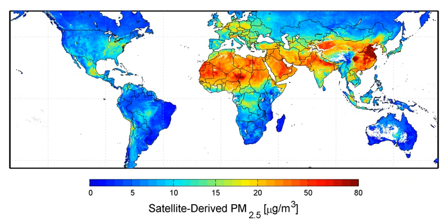Particulate pollution is observed around the globe in varying sizes and compositions and is the focus of many epidemiological studies. Particulate matter is generally classified into two main size categories: PM10 and PM2.5. PM10, also known as coarse particulate matter, consists of particles 10 micrometers and smaller, while PM2.5, also called fine particulate matter, consists of particles 2.5 micrometers and smaller. Particles 2.5 micrometers or smaller are especially notable as they can be inhaled into the lower respiratory system and, with enough exposure, absorbed into the bloodstream.